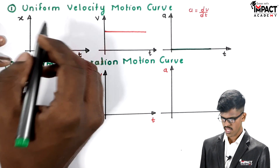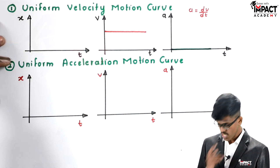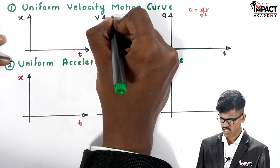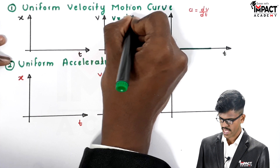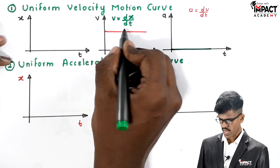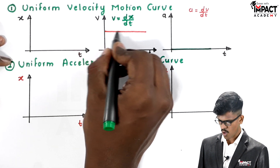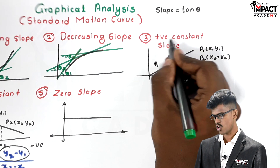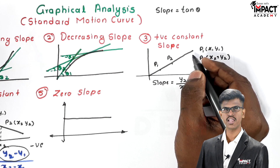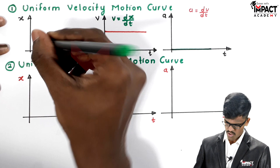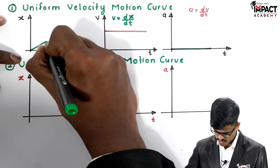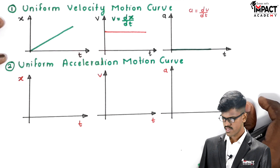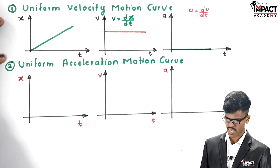One more thing: if we have to find the velocity using the x-t curve, the velocity formula is v = dx/dt, which is the slope of the x-t curve. Here the slope is a constant positive slope, so if the curve has a constant positive slope then the nature of the x-t curve will be an inclined straight line. So for uniform velocity motion, the displacement curve is an inclined straight line.